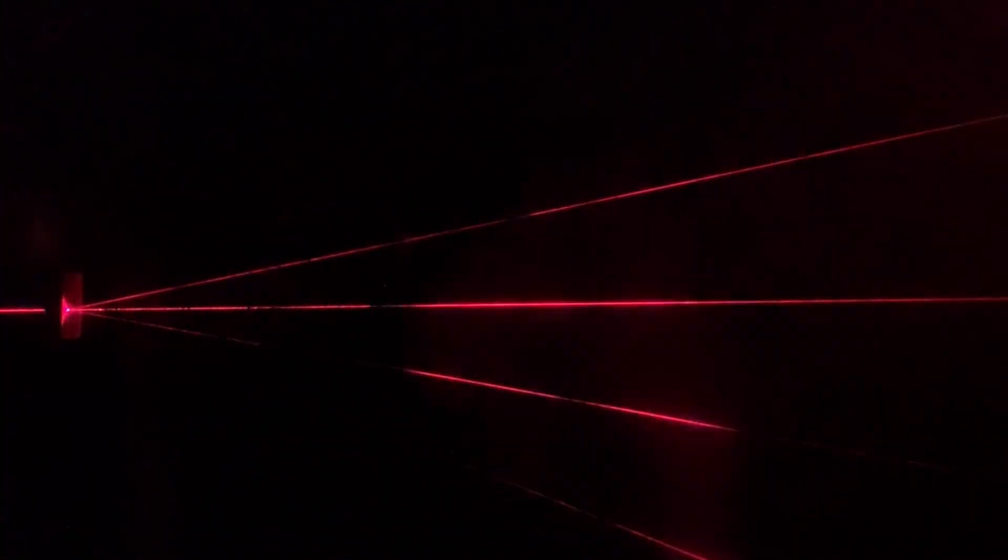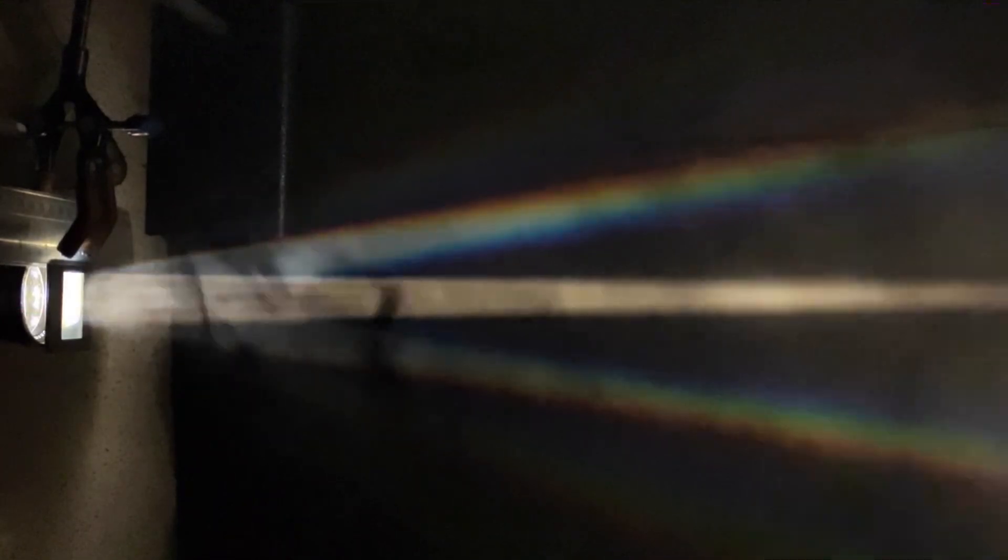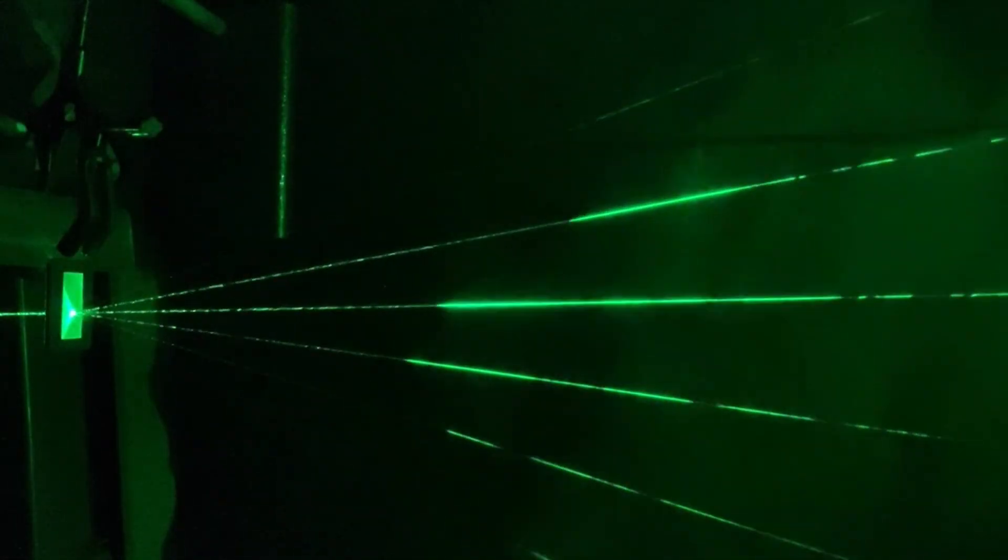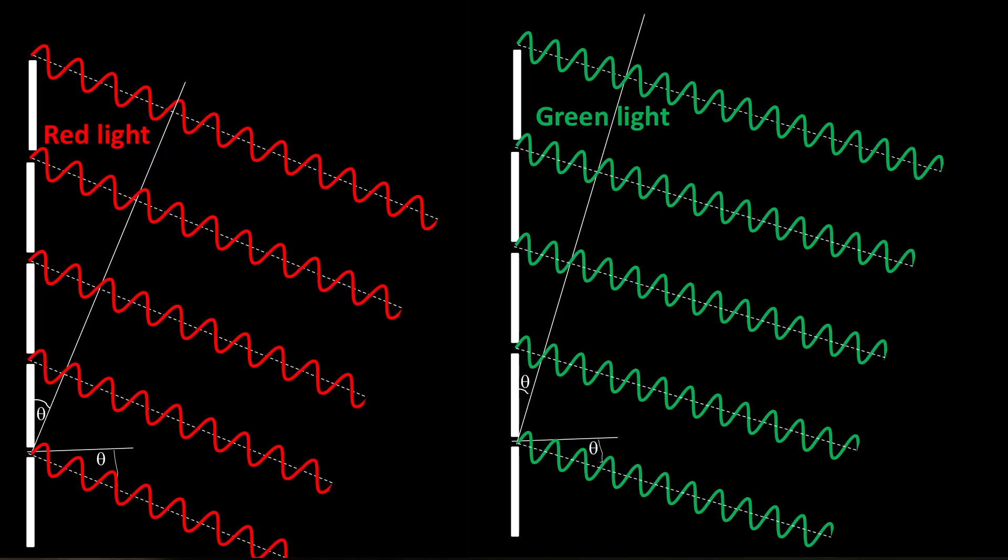We can also see that the angles of the first-order beams of the red and green lasers match up with the angle of those colors in the first-order beam from the white light. In these diagrams, we can see that the first-order beams occur when the light from adjacent slits has to travel exactly one wavelength further, called a path difference of one wavelength.